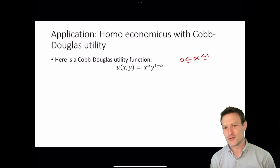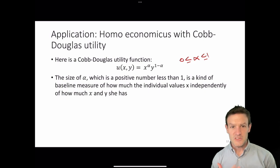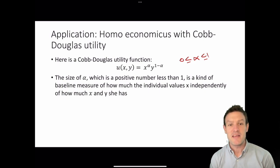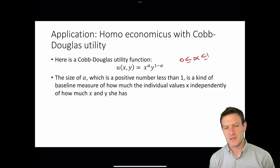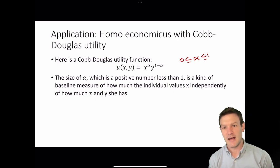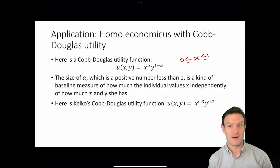What does that mean? Each of them is raised to a fraction or decimal — x is raised to some decimal, y is raised to some decimal less than one. The size of alpha, which is a positive number less than one, is a kind of baseline measure of how much the individual values x independently of how much x and y she has — it's to do with the relative strength of your preference for the two goods. If alpha is pretty large, x is raised to a larger number relatively than y, since y is raised to one minus alpha. Or if alpha is small, the power that x is raised to is not that large.